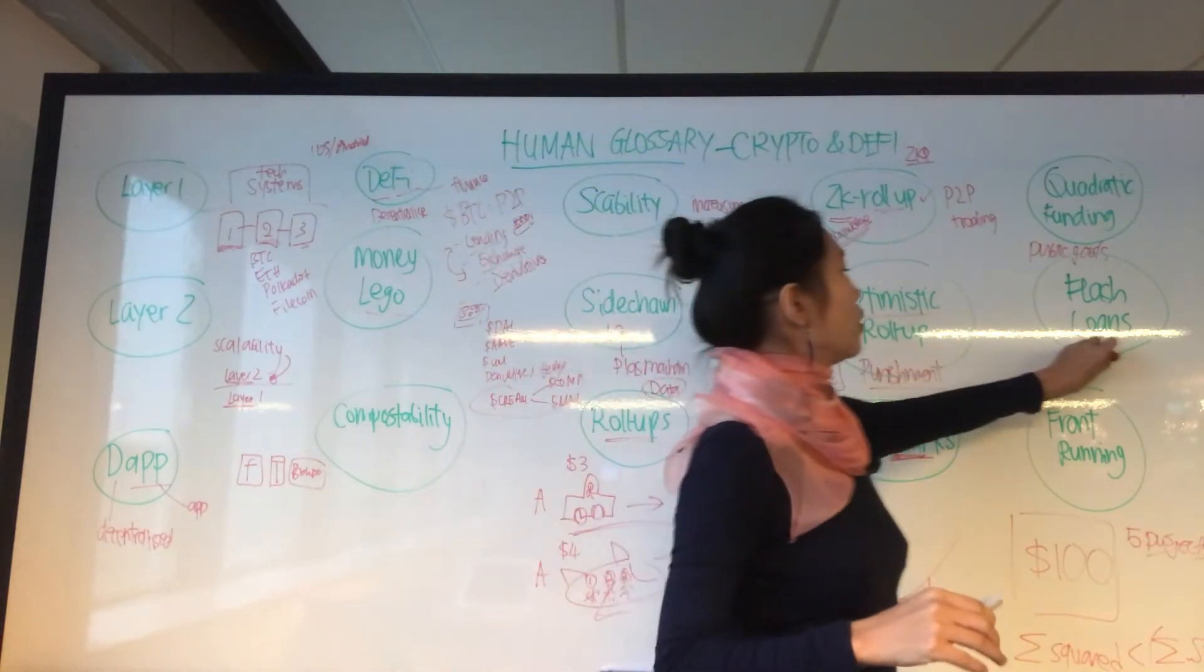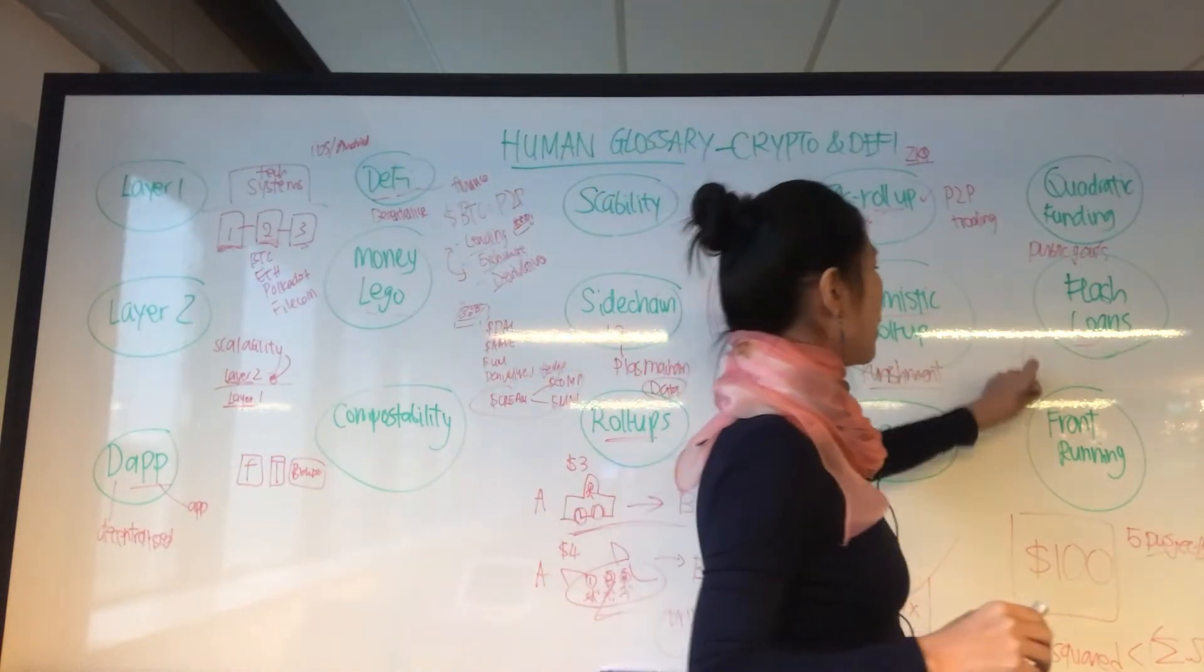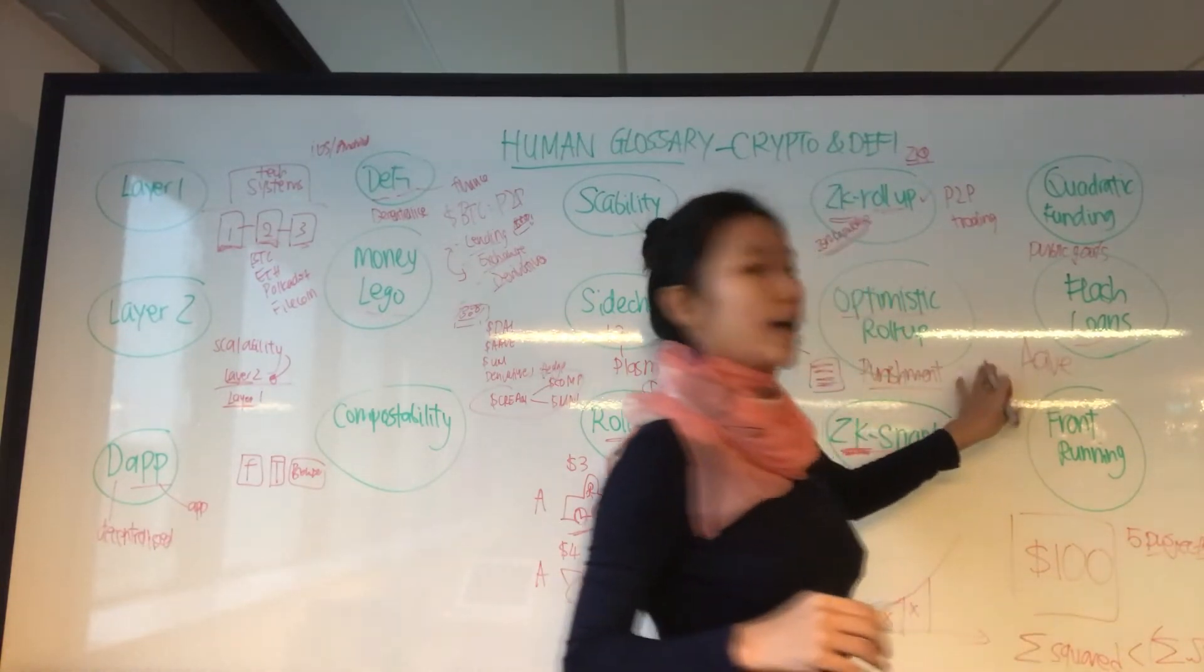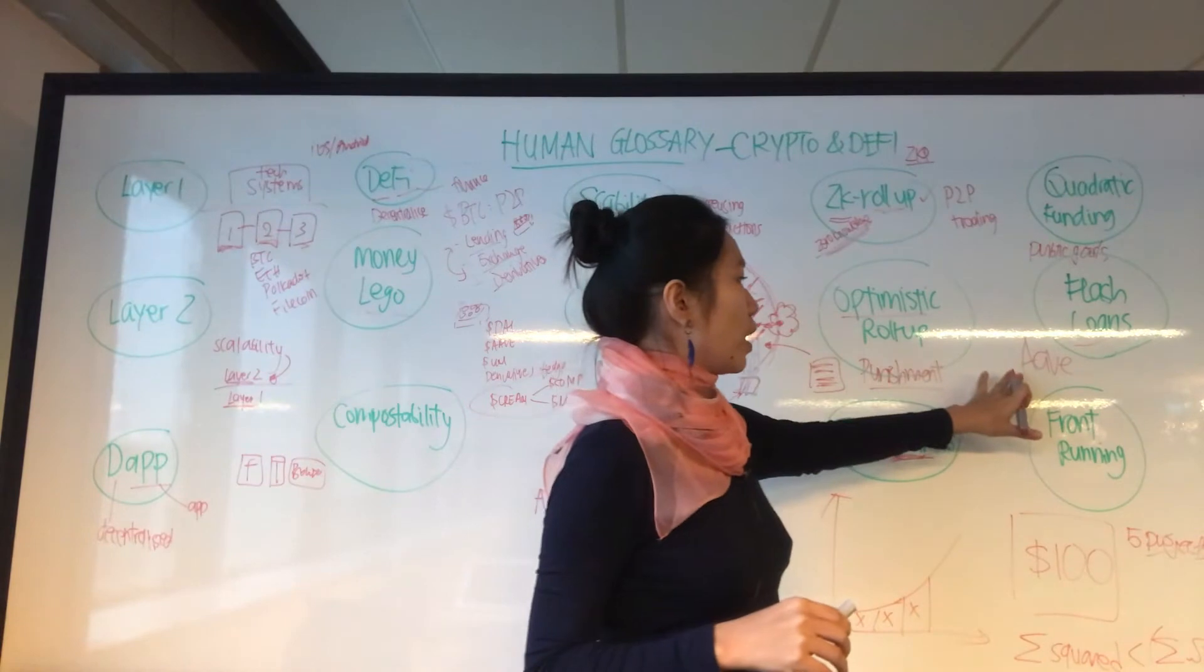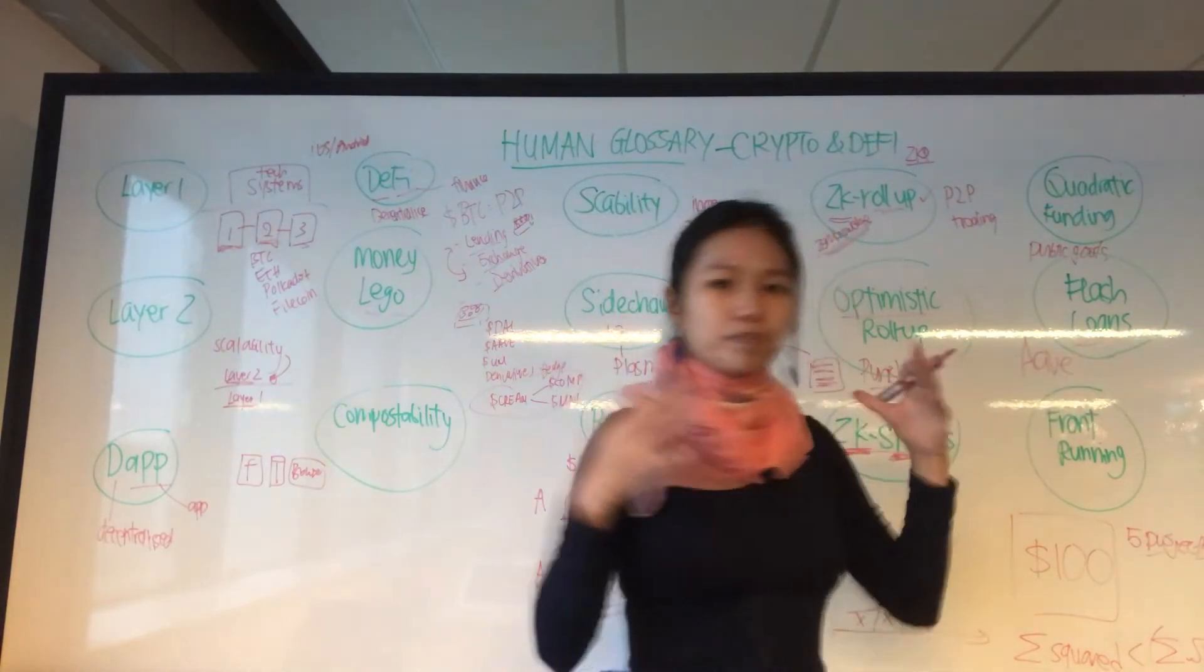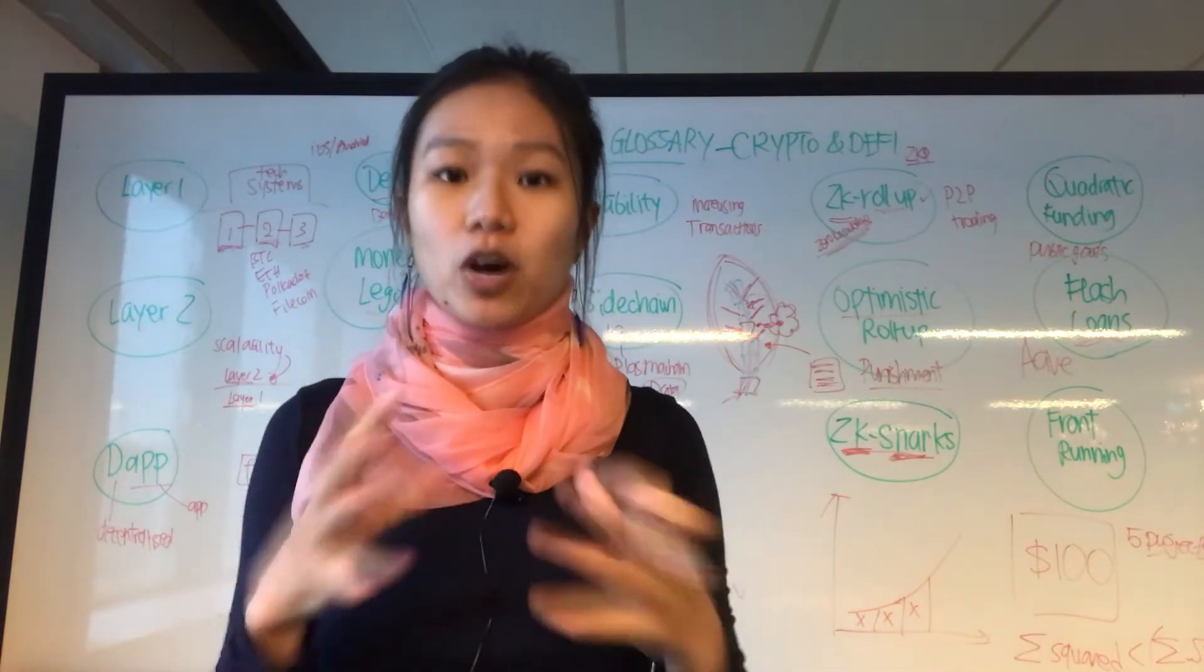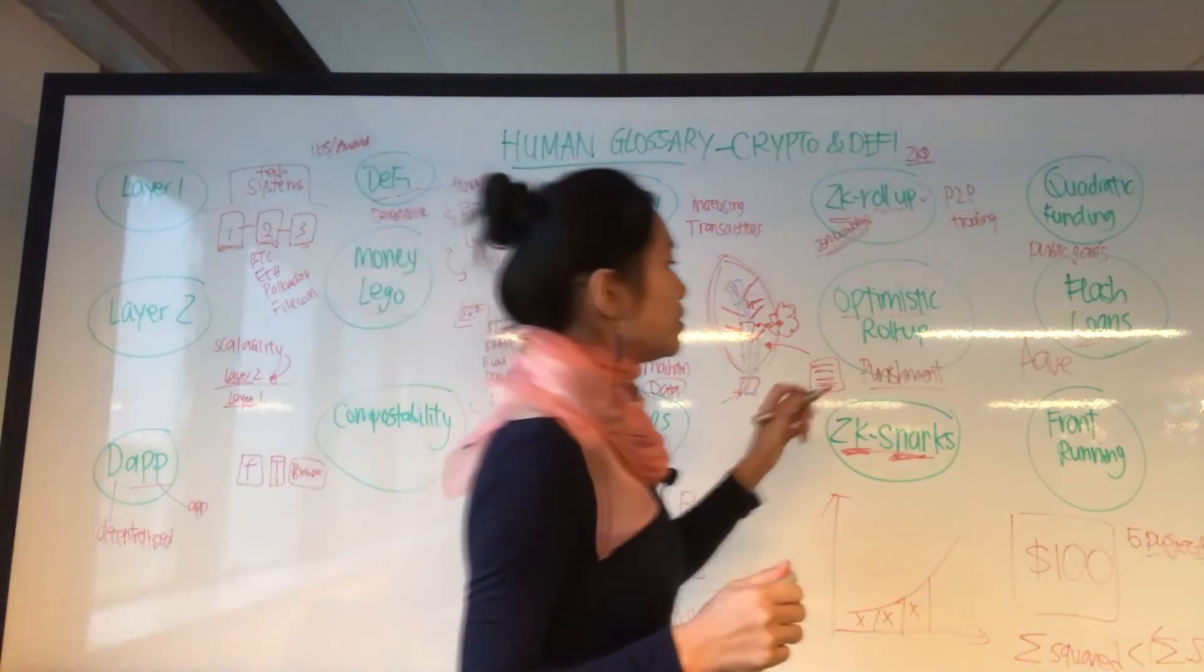Flash loan started with Aave, and Aave is a lending protocol. Flash loan becomes a business logic, a technological logic that smart contracts can execute.